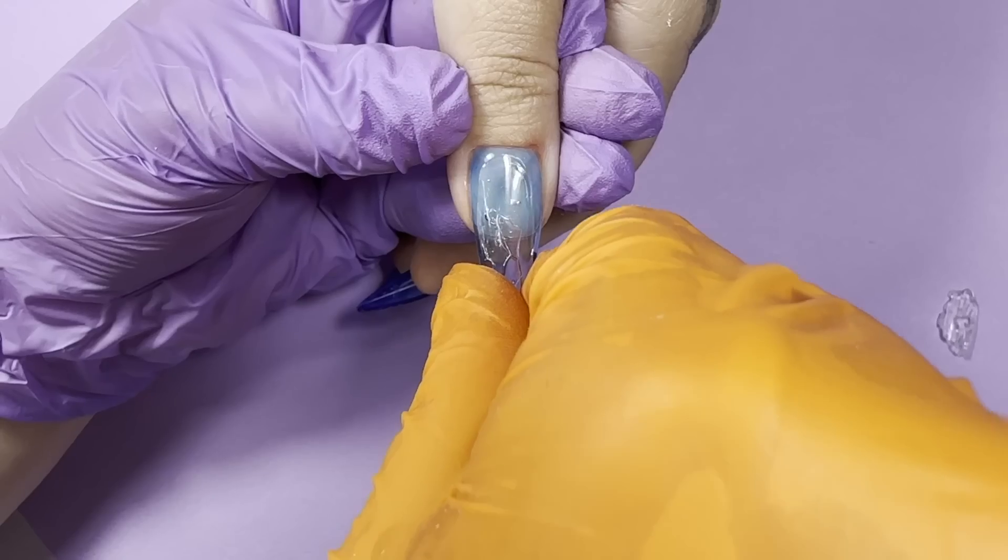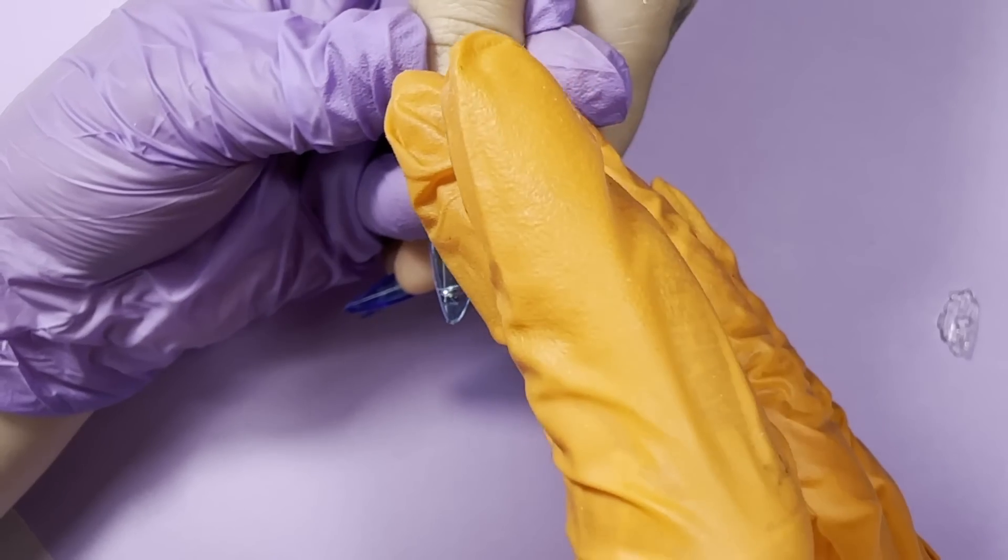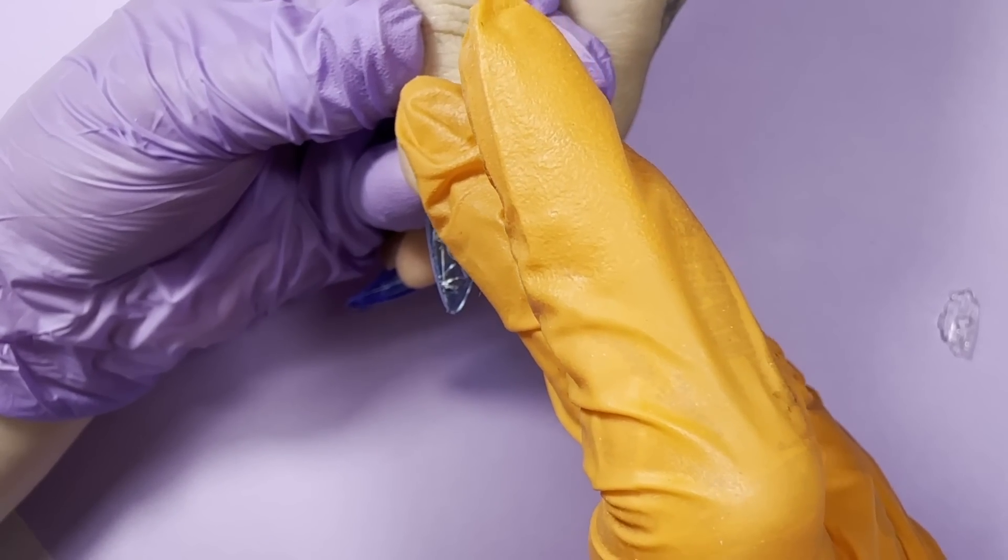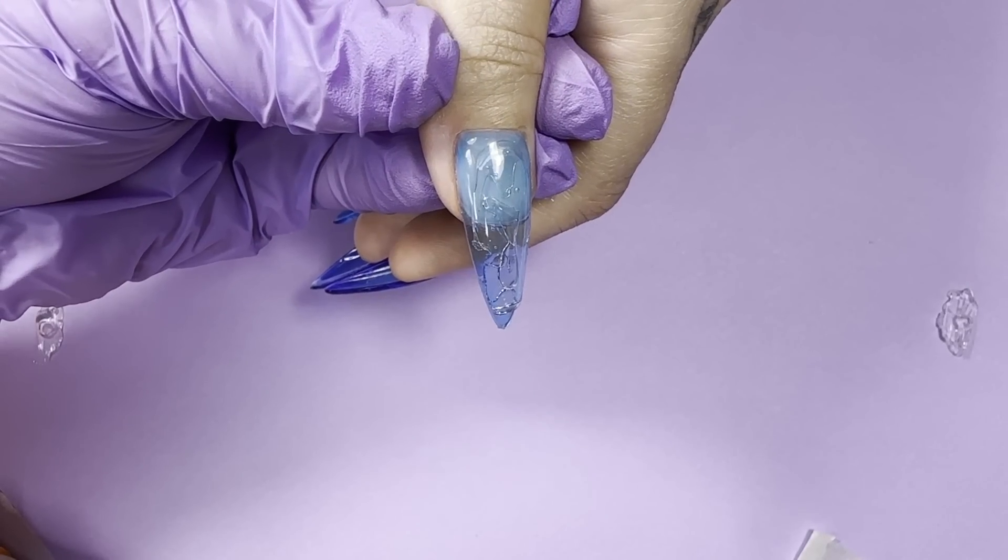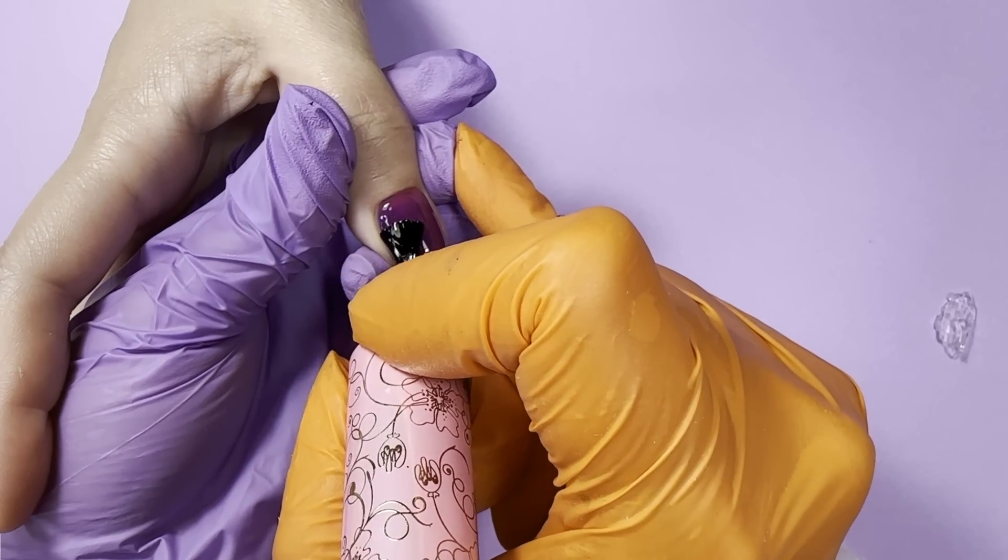You can use any product of your choice. We decided to use a regular gel. Just apply it, then put it on top of the nail and cure it. Since the product is transparent, we do not need to worry that it's not going to cure. It will be all good.